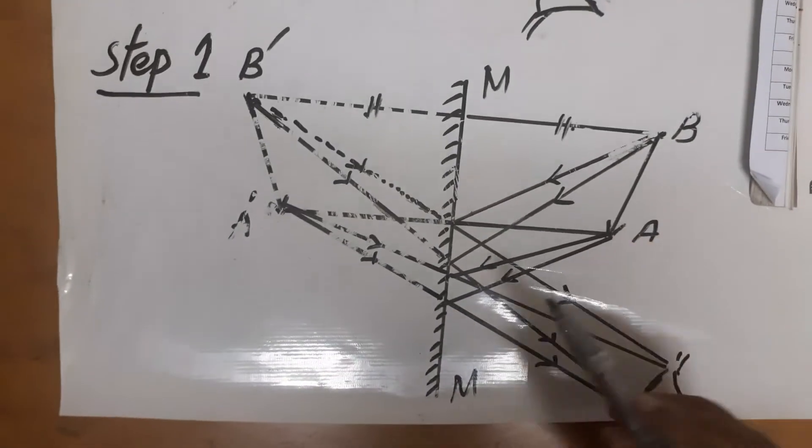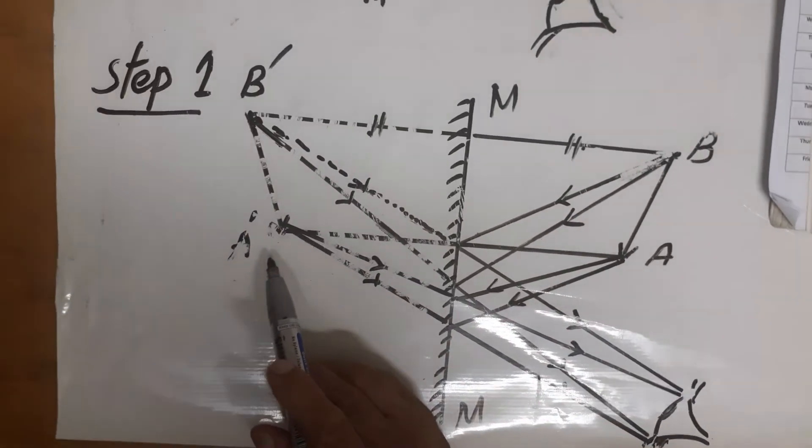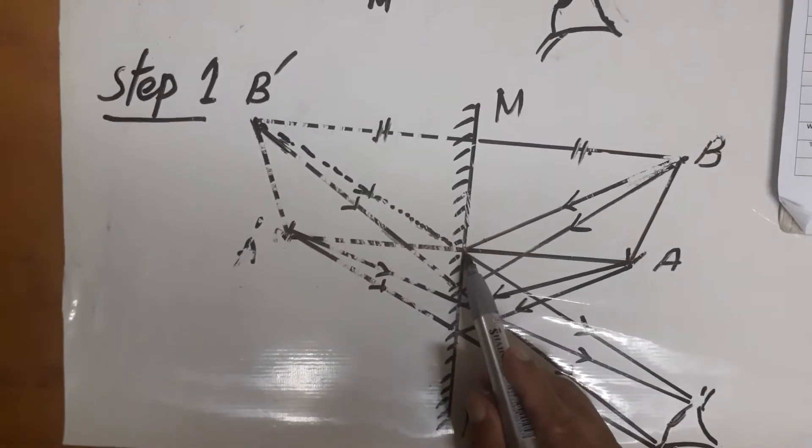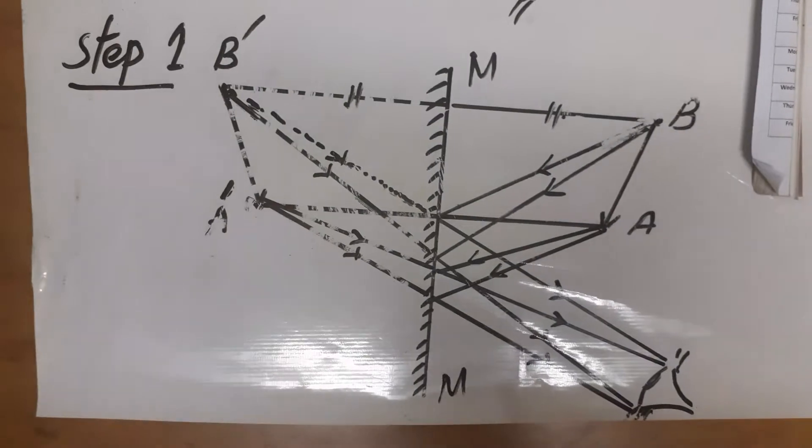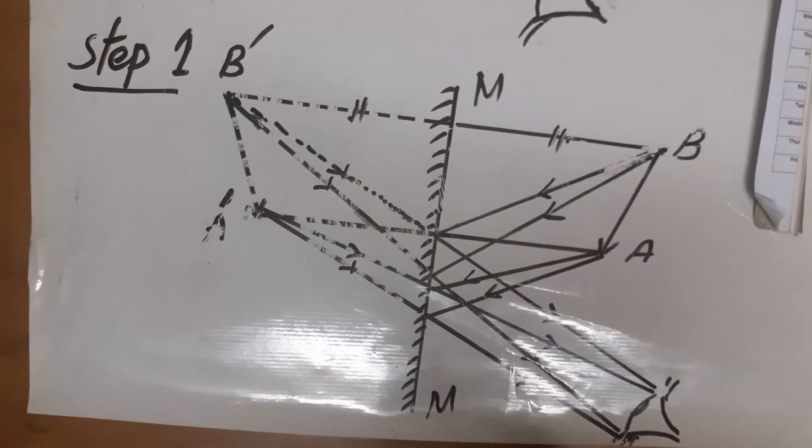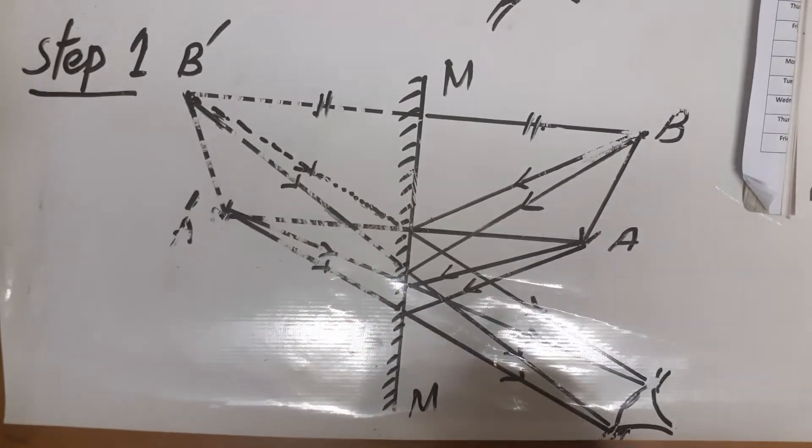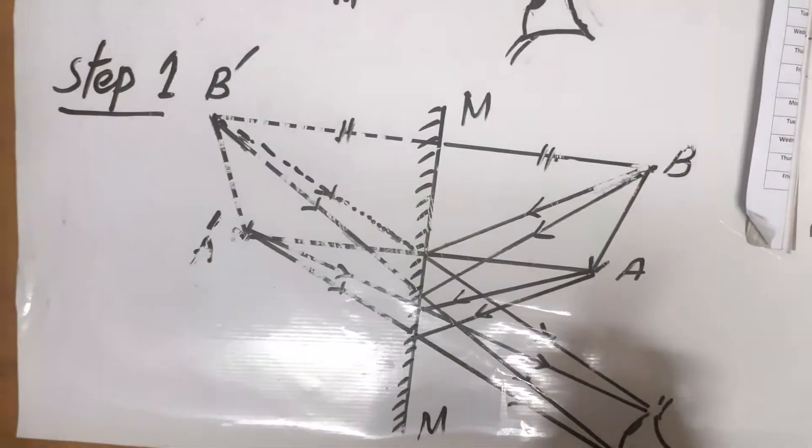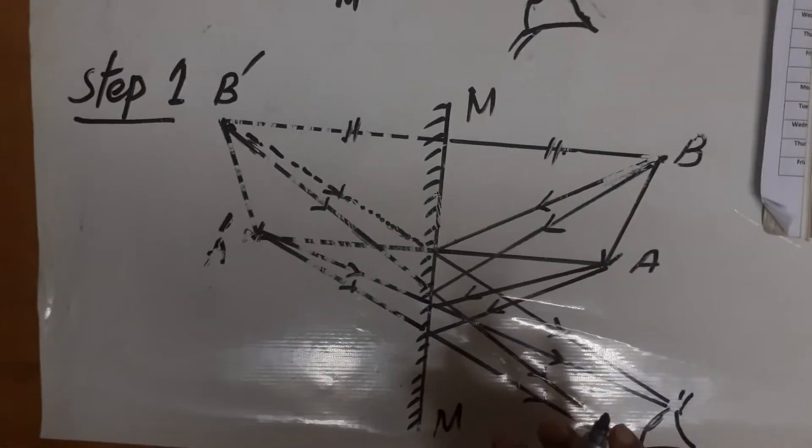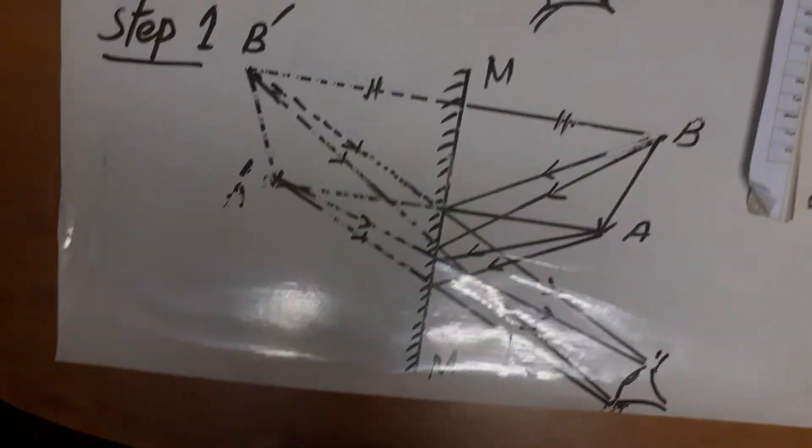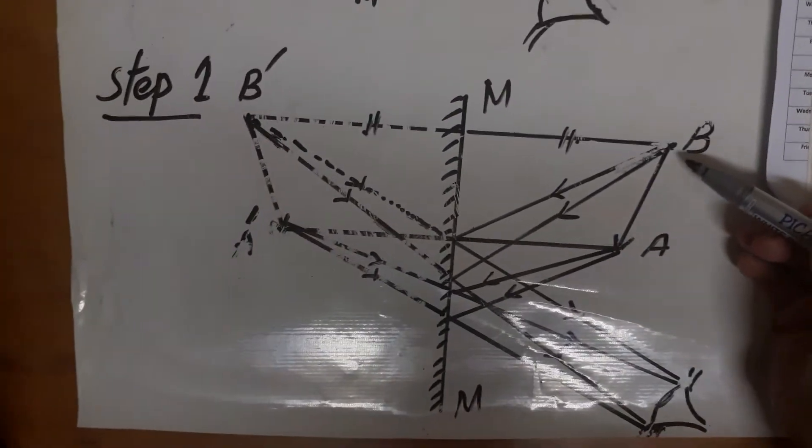Likewise, the distance of the head of the object and the head of the image from mirror A and from mirror A dash has the same distance, because we studied in the first lecture the characteristic of plane mirror that whatever the distance is in front of the mirror of the object, the image will be formed at the same distance behind the mirror.